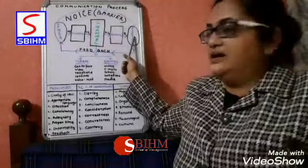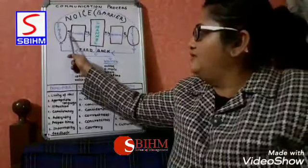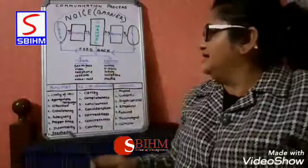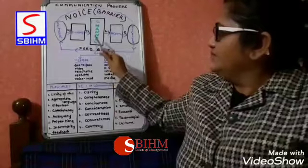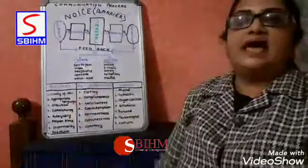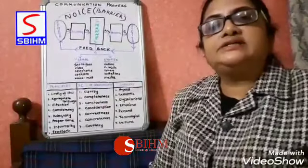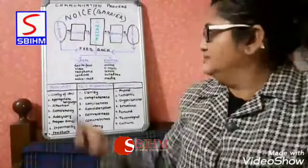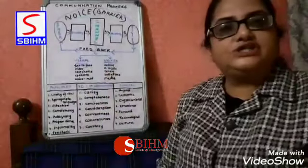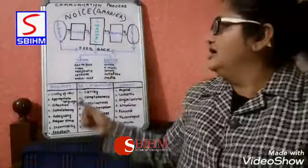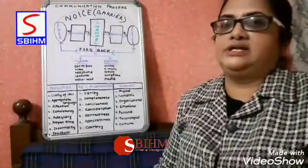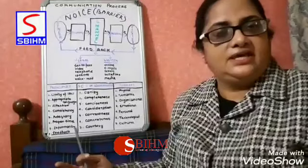If there is no barrier, the receiver gives proper feedback — that is the action being taken. Now, through this channel, there are basically three types of communication: verbal or oral communication, written communication, and non-verbal communication, which includes body language, gestures, postures, and so on.